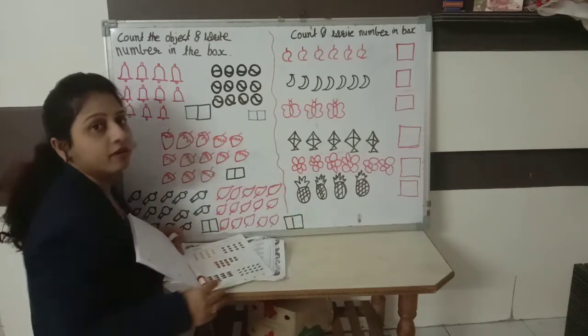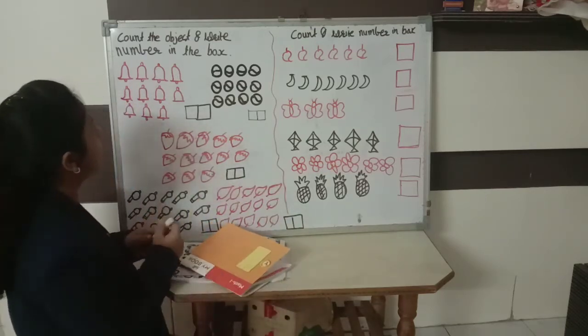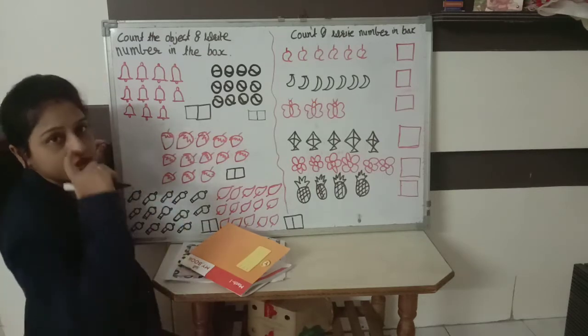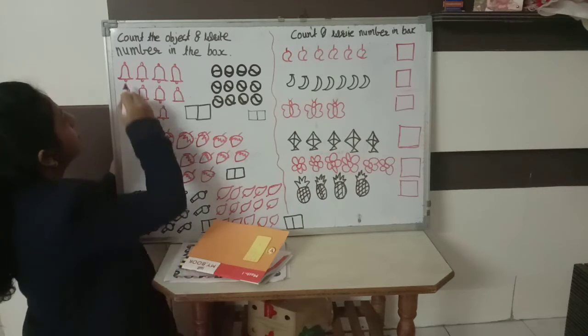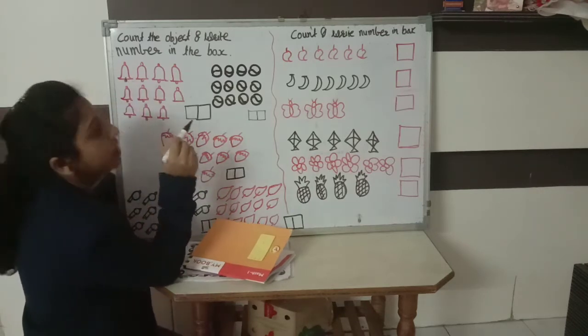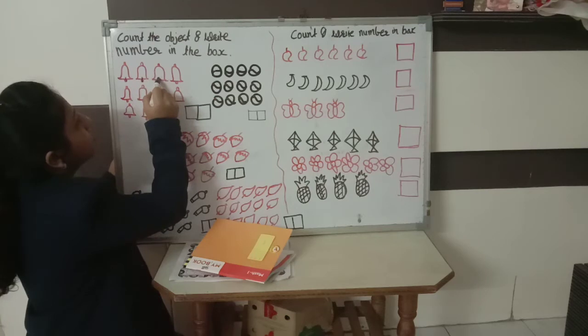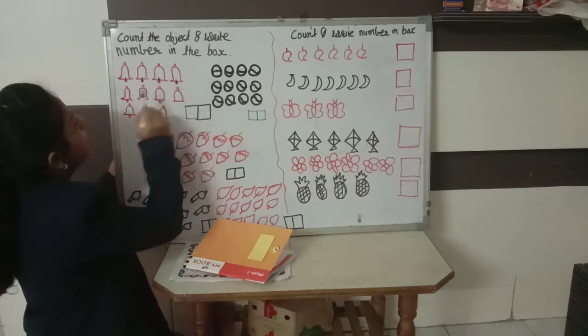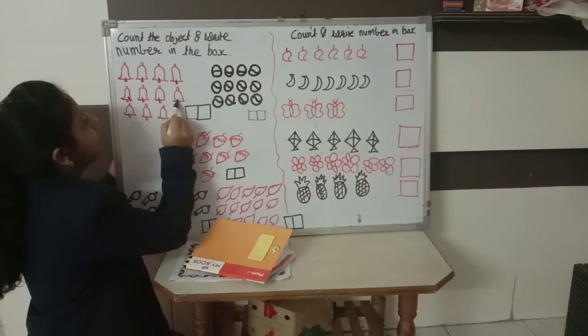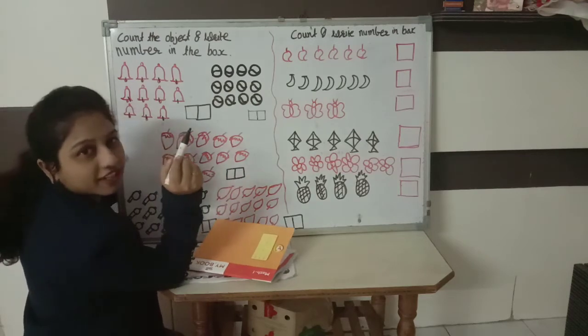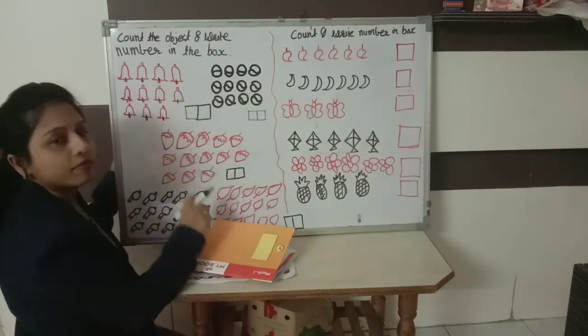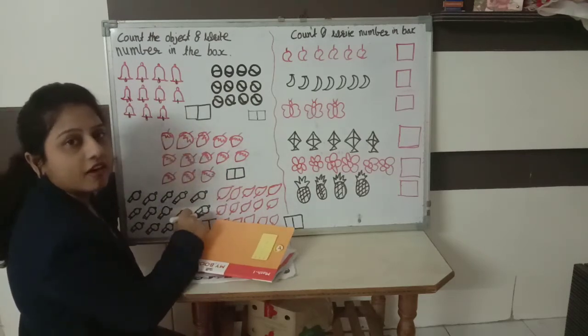What is this? These are bells. Okay, let's count. 1, everyone repeat after me, 2, 3, 4, 5, 6, 7, 8, 9, 10 and 11. How many bells are here? 11.